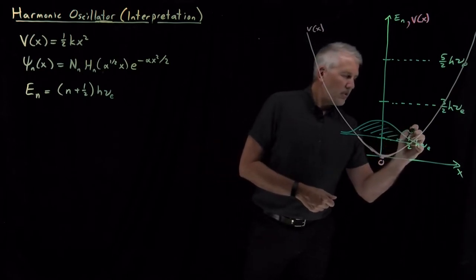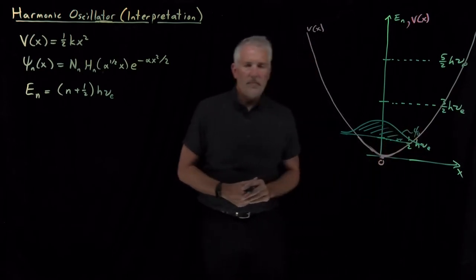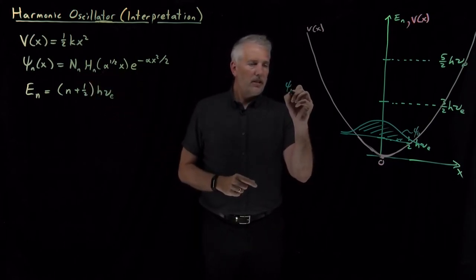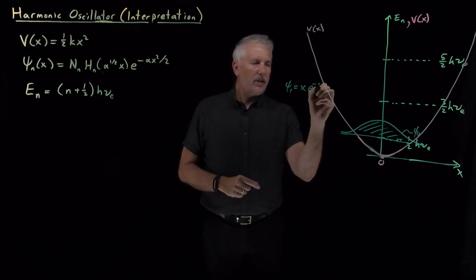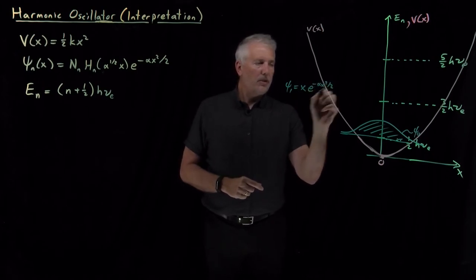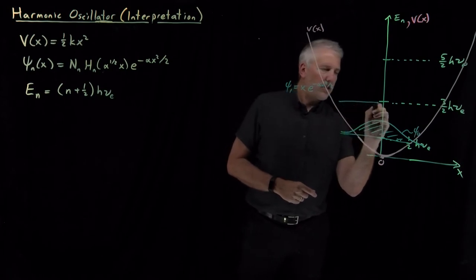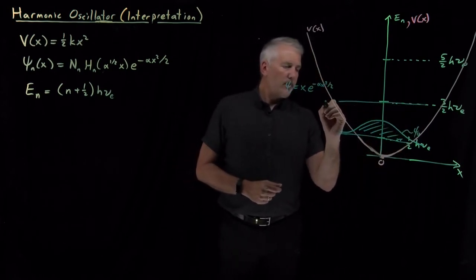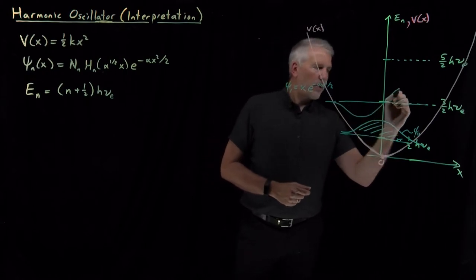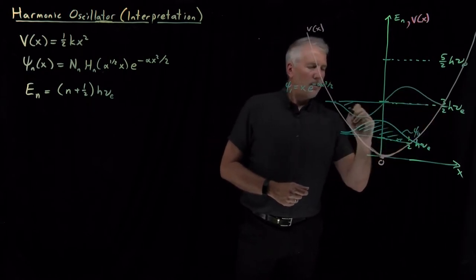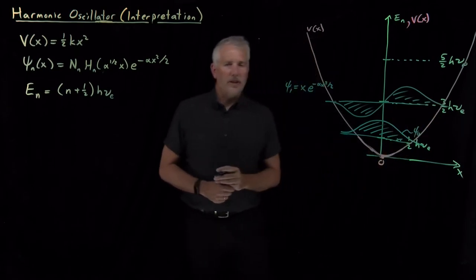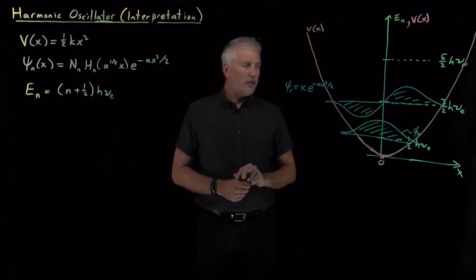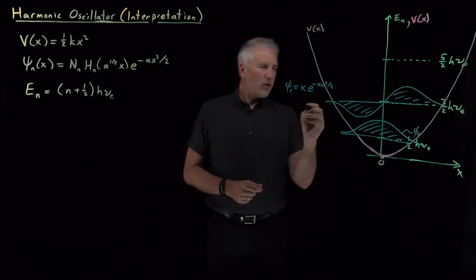This one is ψ₀. I'll draw ψ₁ as well. Remember, ψ₁ looks like x·e^(−αx²/2). If I draw that wave function and superimpose it on top of the n=1 energy level, that one starts out negative, goes positive, and dies as x is large in either direction. That's the wave function with a single node in it at x=0. That's what the ψ₁ wave function looks like.